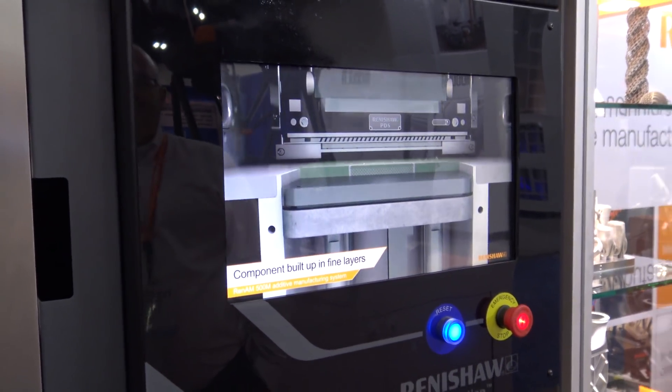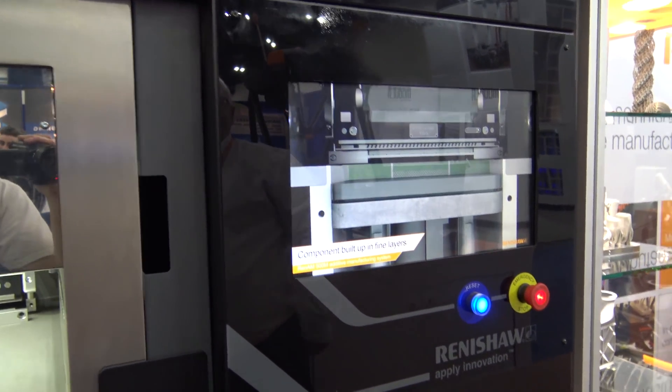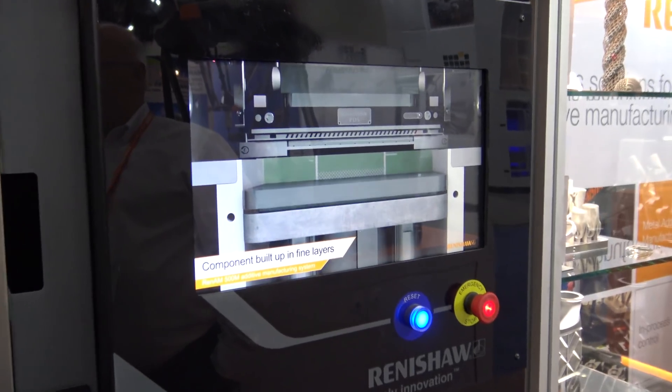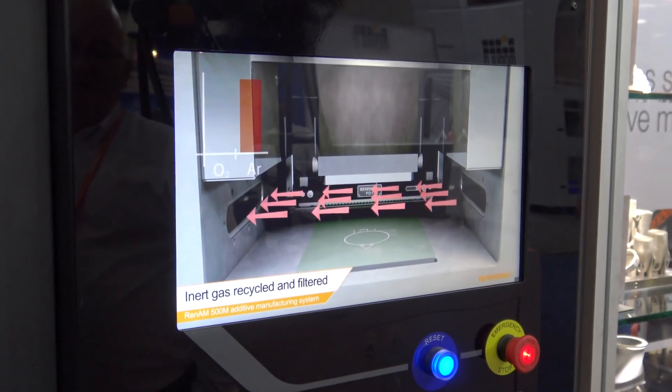You're just going to de-stress it. You just see it's in fine layers, so typically 50 microns at a time. Drop the stage down, put a new layer of powder, fire the lasers at it.